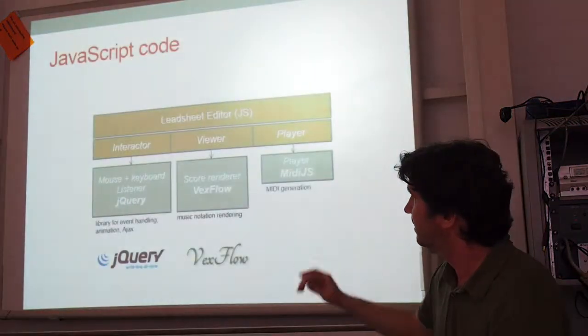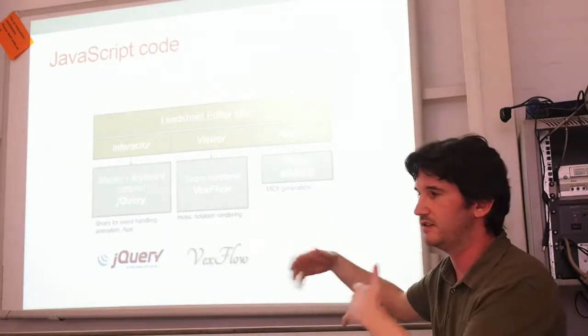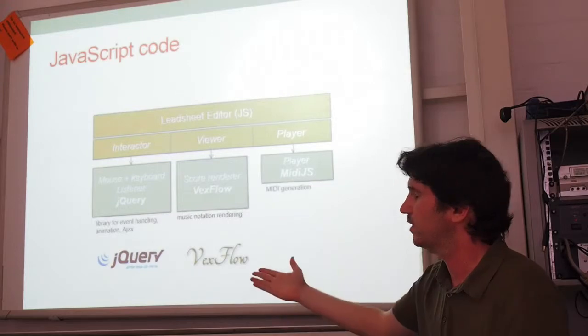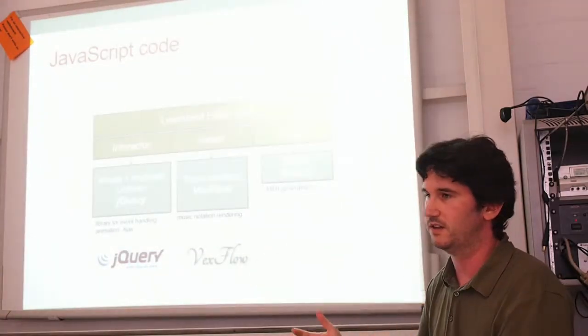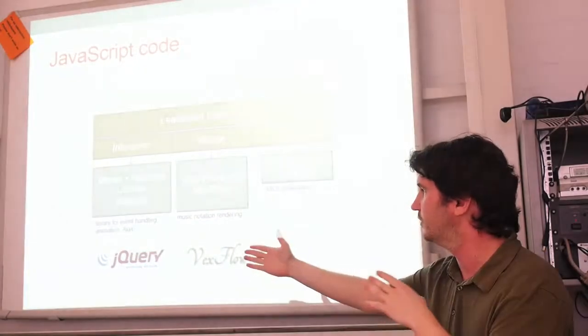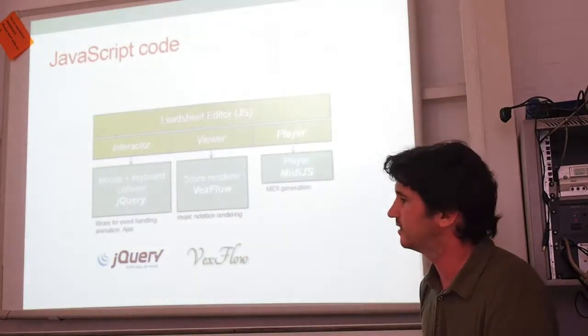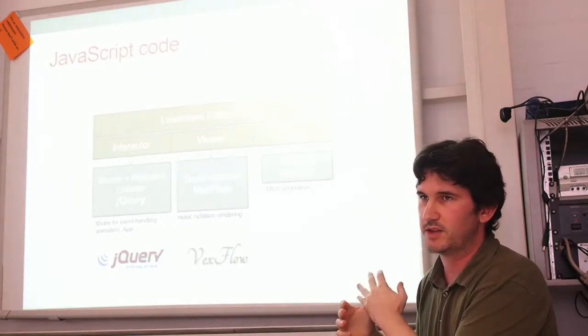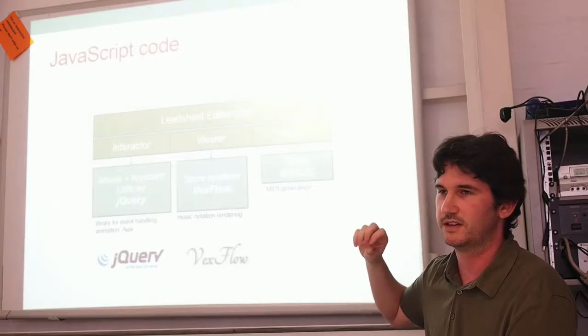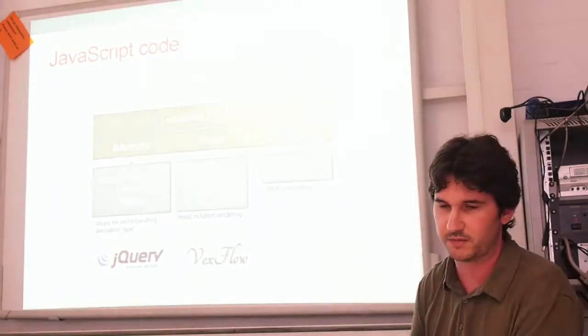And for the JavaScript part, we have three parts, the interactor, the viewer, and the player. So the interactor is what allows the lead sheet to be editable. For that we used jQuery, which is the most popular library in the web. jQuery does many things, but what we were interested in is the event manager. So it listens to the event of the user. If the user clicks somewhere or the user does an action, you can manage it with jQuery. So we use that for the interaction part. For the rendering part, we use Vexflow, which is a score rendering library that works in HTML5 canvas. It's the new standard for the web. So you can visualize scores without having to install a plugin or without using Flash. And finally we used midi.js, which is a library for playing MIDI in the web browser.